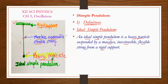An ideal simple pendulum is a heavy particle suspended by a massless, inextensible, and flexible string from a rigid support. But in practice, we cannot have such a massless string, and we cannot attach a heavy particle directly to a string.